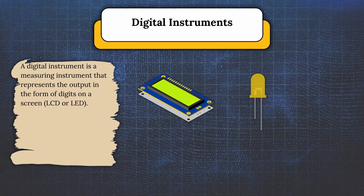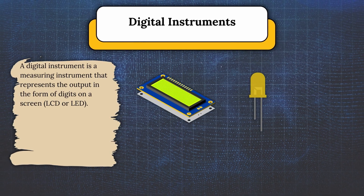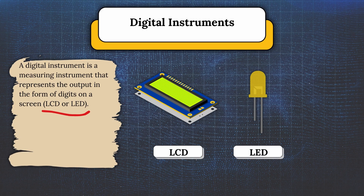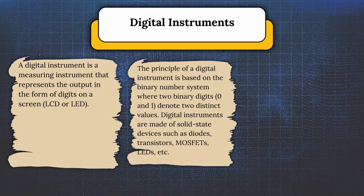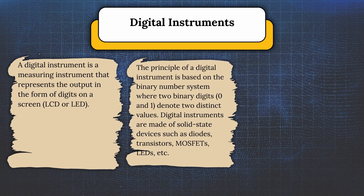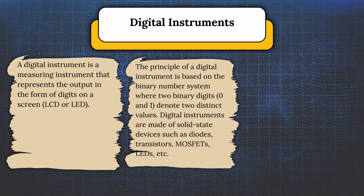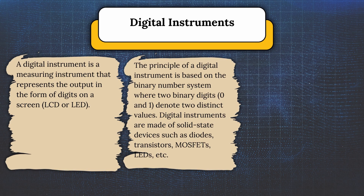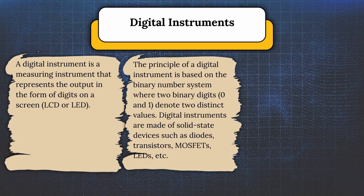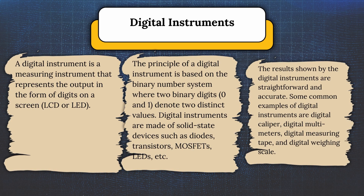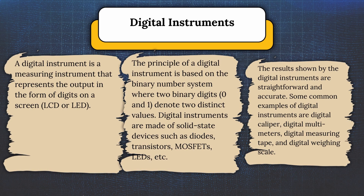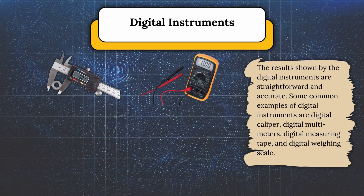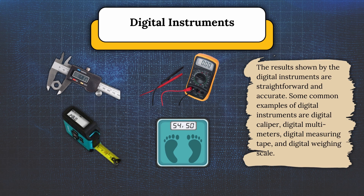For the digital instruments — a digital instrument represents the output in the form of digits on a screen, LCD, or LED. The principle is based on the binary number system using two binary digits, zero and one. Digital instruments are made of solid-state devices such as diodes, transistors, MOSFETs, and LEDs. The results shown by digital instruments are straightforward and accurate. Some common examples are digital caliper, digital multimeter, digital measuring tape, and digital weighing scale.